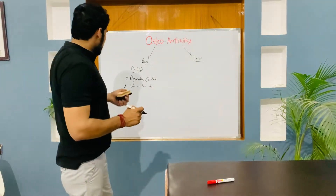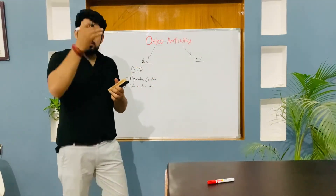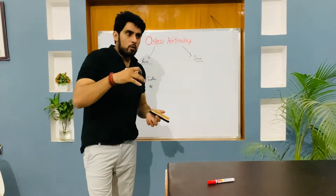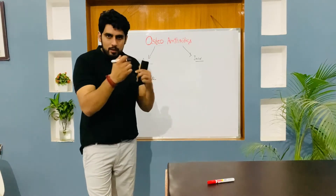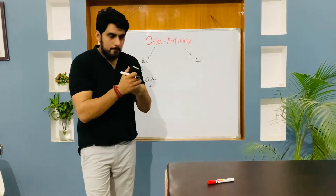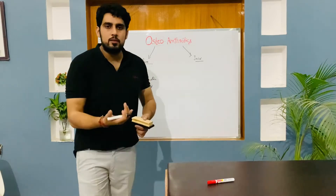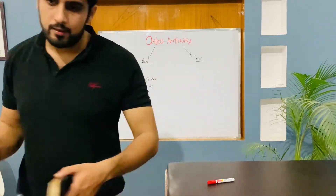Our joints have cartilage that protects the bones. When that cartilage gets broken down, the bones are exposed and the degenerative condition develops. That condition is called osteoarthritis.